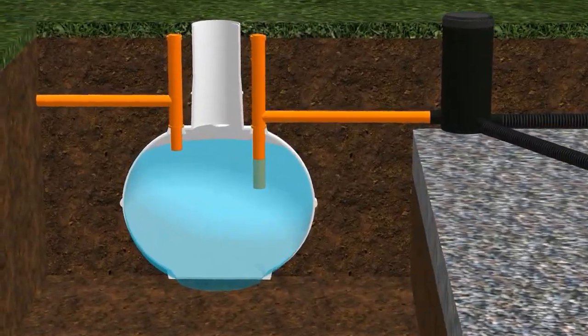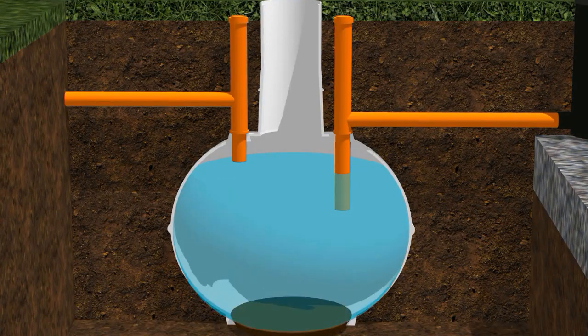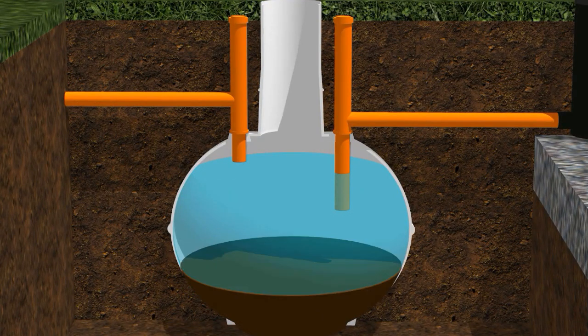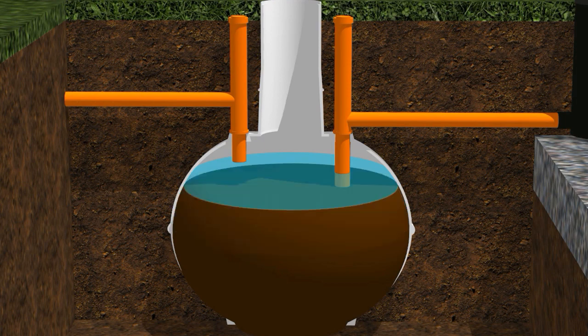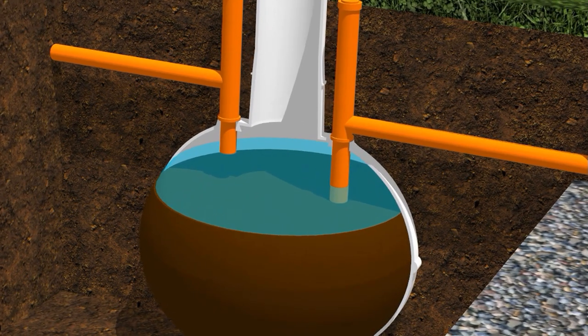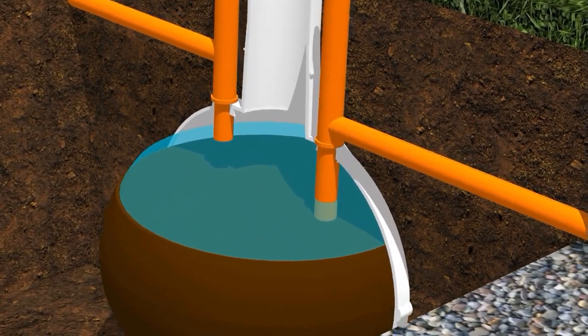Over time, fat, grease and sludge starts to build up inside the septic tank. And once this sludge reaches a certain level, it will then start to make its way down the outlet pipe.